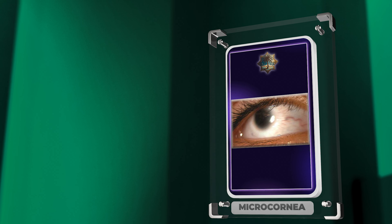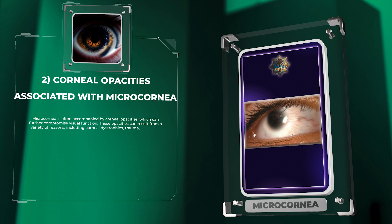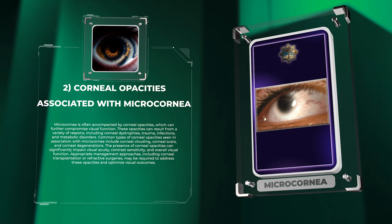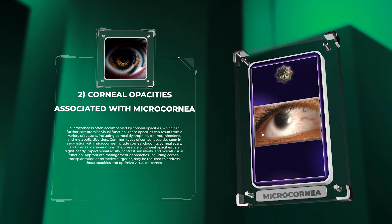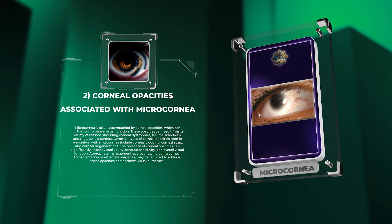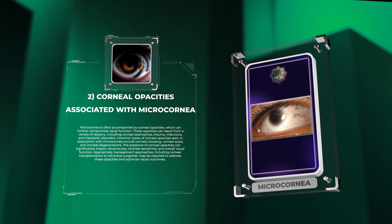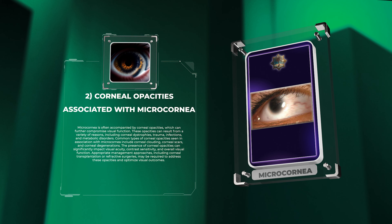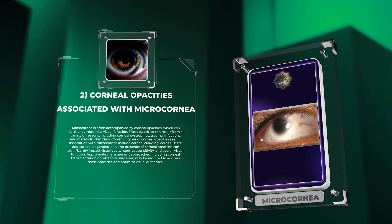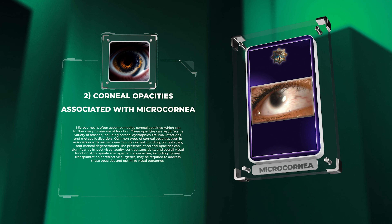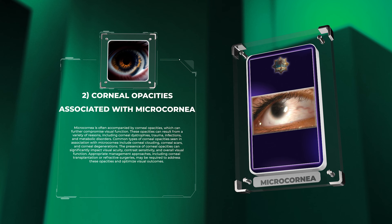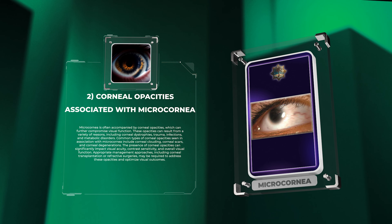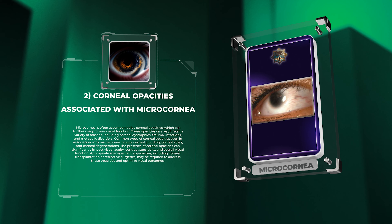Microcornea is often accompanied by corneal opacities, which can further compromise visual function. These opacities can result from a variety of reasons, including corneal dystrophies, trauma, infections, and metabolic disorders. Common types seen in association with microcornea include corneal clouding, corneal scars, and corneal degenerations. The presence of corneal opacities can significantly impact visual acuity, contrast sensitivity, and overall visual function.